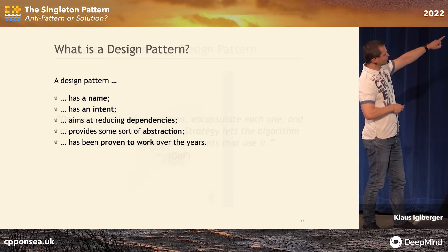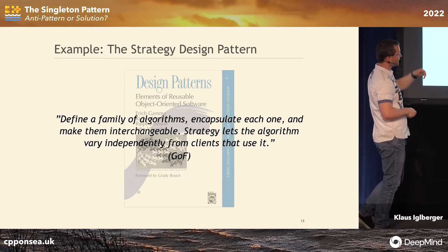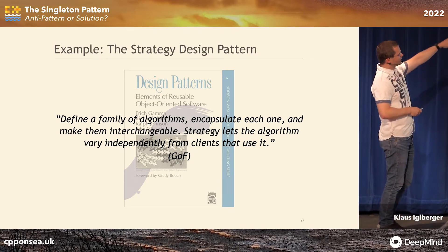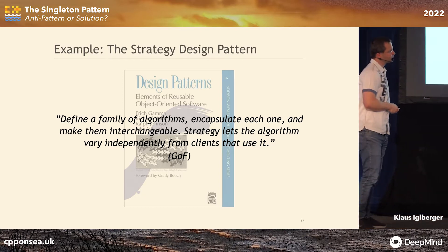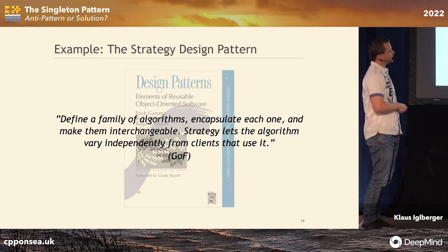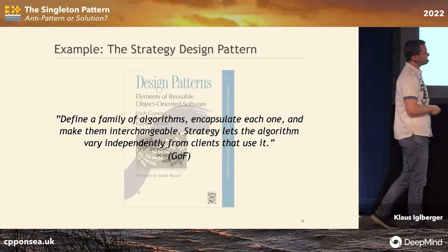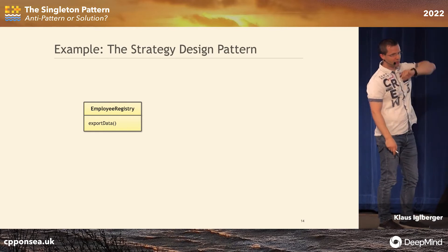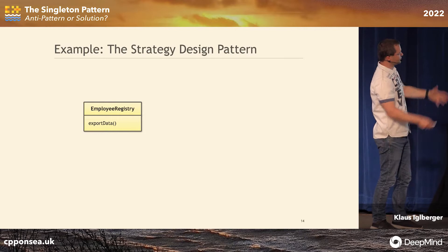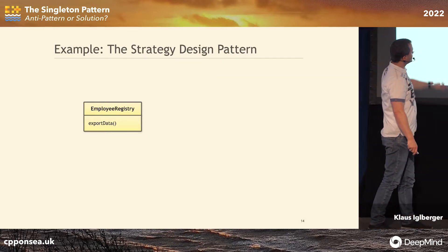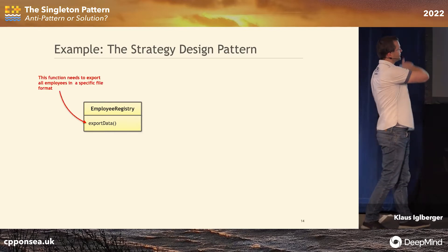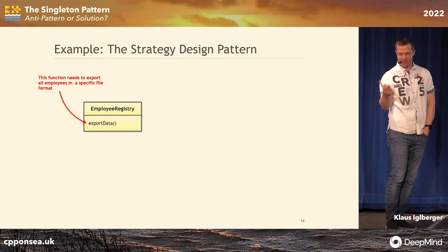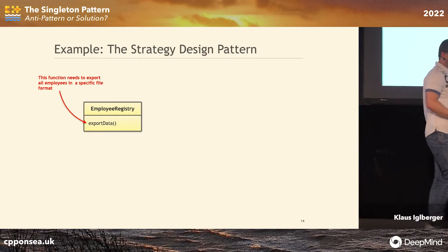If this is the definition, let's take a look at a real design pattern — another one from the Gang of Four: the strategy design pattern, probably the most well-known in the book. The intent: define a family of algorithms, encapsulate each one, and make them interchangeable. Strategy lets the algorithm vary independently from clients that use it. Imagine we have an employee registry — a class that stores a lot of employees. At some point it wants to export some data. The intent of export data is clear — we have to write it, but how? In which format?